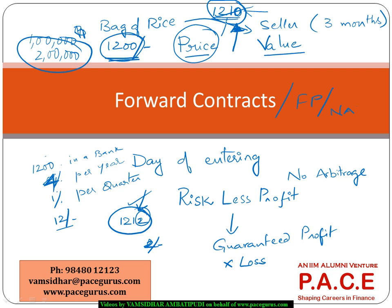The forward price should be designed such that at the time of entering into the contract, neither the buyer nor the seller is at any kind of disadvantage. There should be no specific advantage to either party — it should be indifferent between buying today versus buying at a later date. Such a scenario needs to be established, and that is what we call the no-arbitrage forward price.